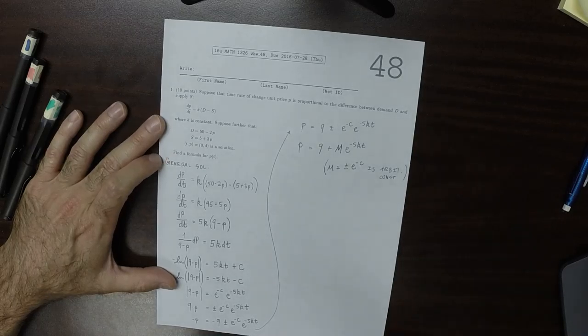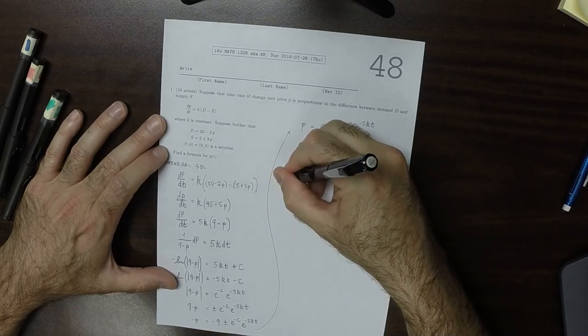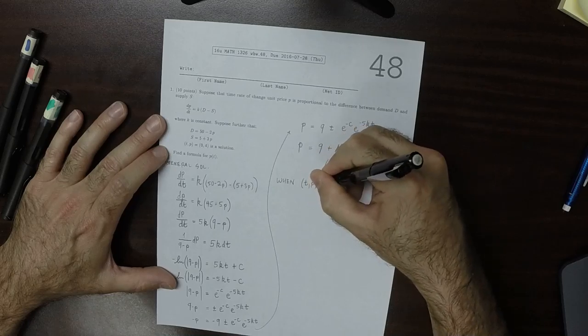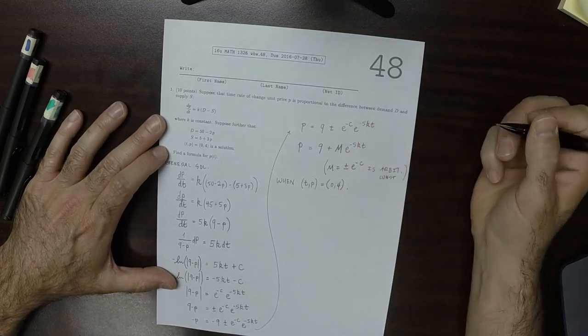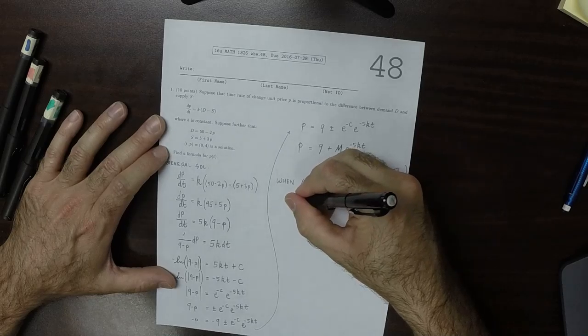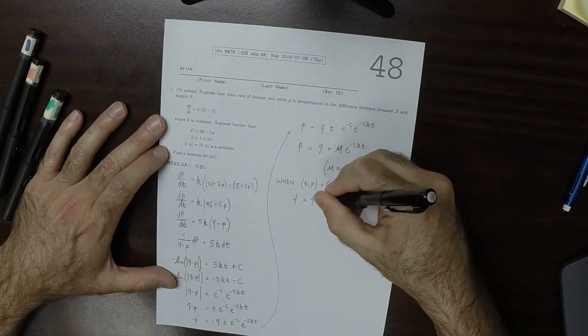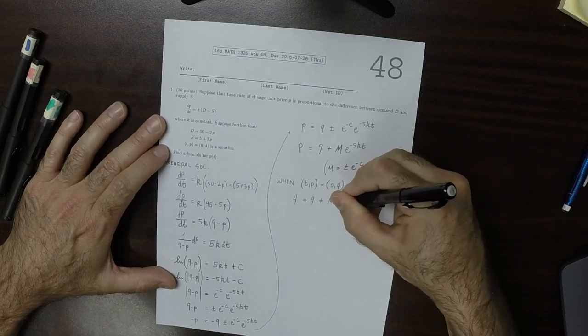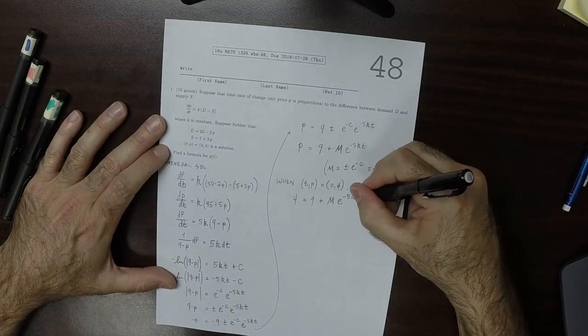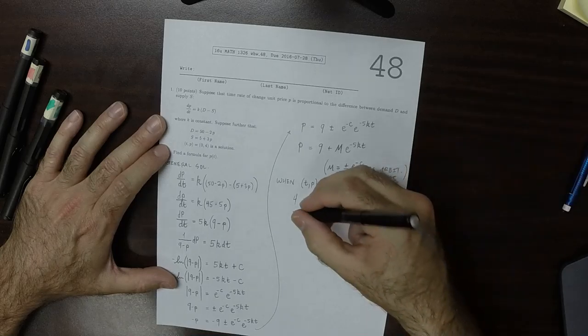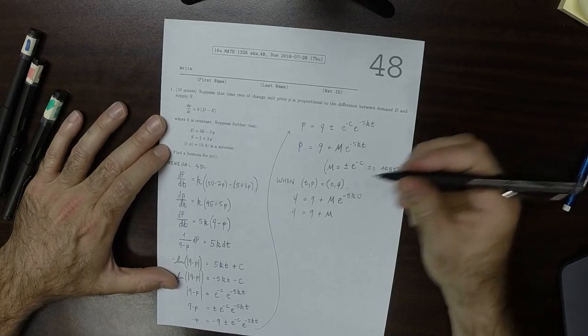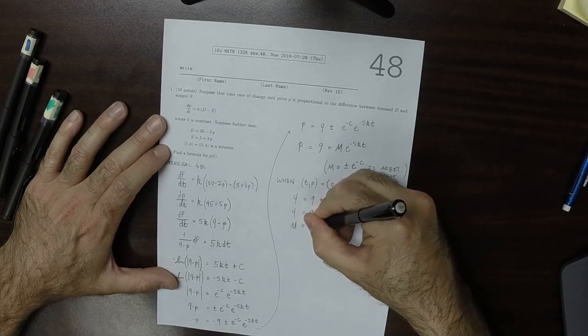We can find the specific solution when we know that t, p equal to 0, 4 is a solution. So if we plug in t is 0 and p is 4, that should solve it. So 4 is 9 plus m exponential negative 5k times 0. So that means that 4 is 9 plus m. So that tells us that m is negative 5.